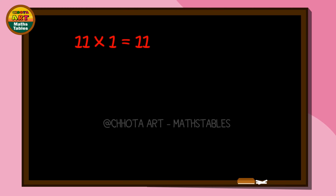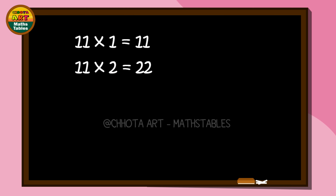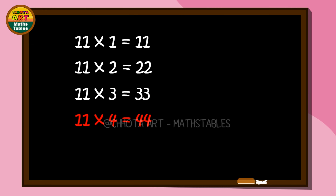11 twos are 22. 11 threes are 33. 11 fours are 44. 11 fives are 55.